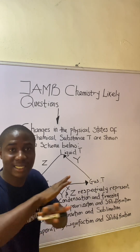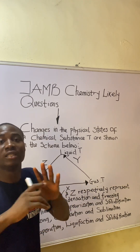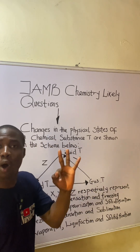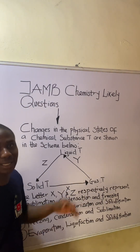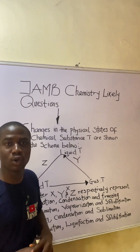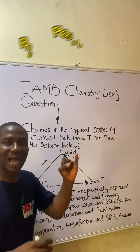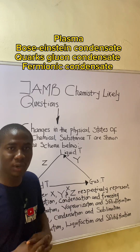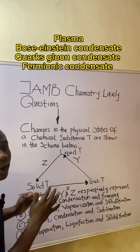The phase transfer triangle explains how the state of matter changes from one form to another. We have three major states and four minor states of matter. The three major states are solid, liquid, and gas. The four minor states include plasma, Bose-Einstein condensate, fermionic condensate, and quark-gluon condensate.